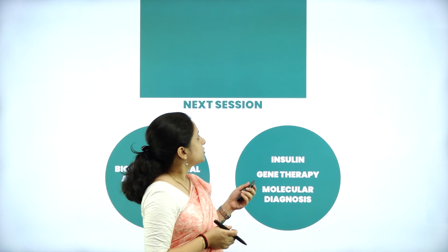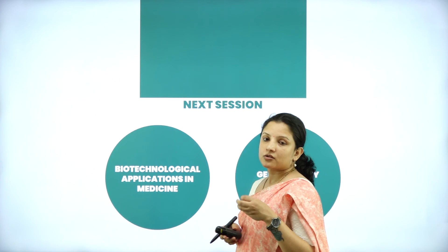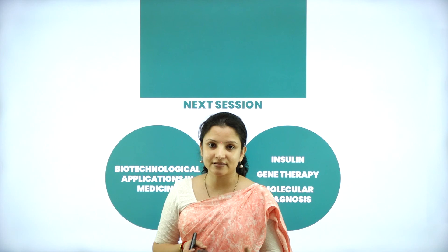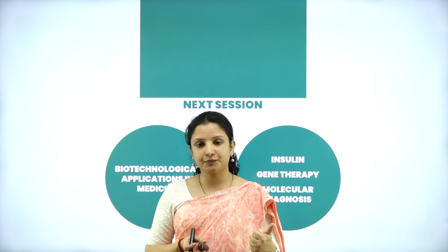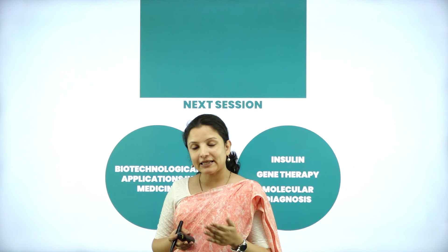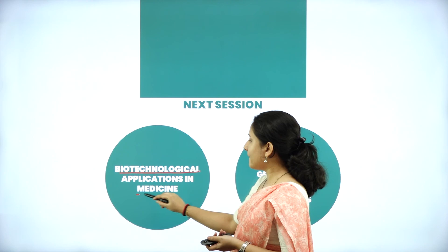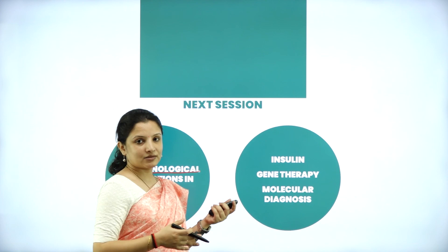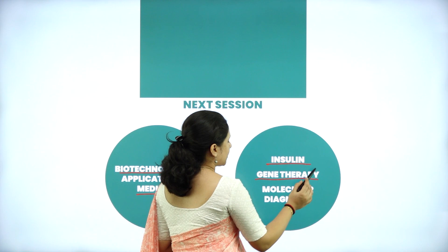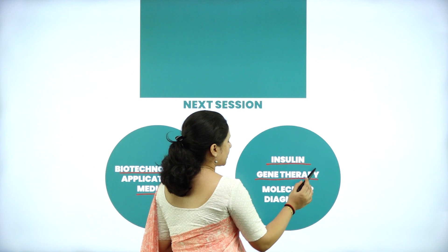This session covered transgenic approaches to create pest-resistant crops — how Bt cotton was produced and how the tobacco plant was made resistant to nematodes. In the next session, we shall study about the role of biotechnology in medicine, including how biotechnology is used to produce insulin, how it is used for gene therapy, and how it is used as a tool for molecular diagnosis. We shall meet again in the coming session. Thank you.